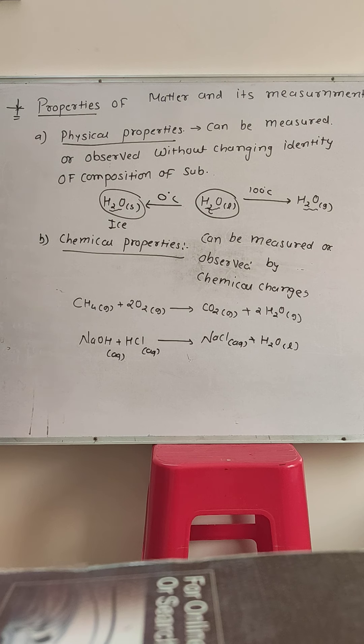When you're talking about chemical properties, you can measure them when using a compound in a reaction, and the composition changes. For example, with methane combustion, methane reacts to produce CO2 plus water.